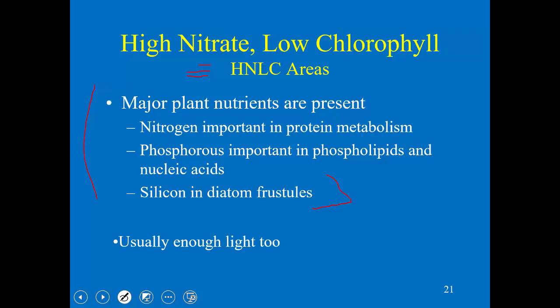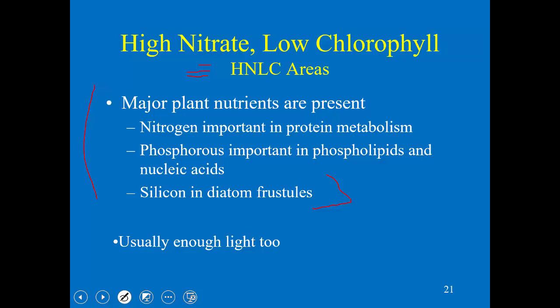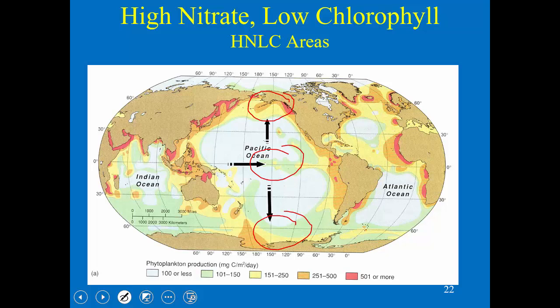There's also enough light — so it's not a question of light limiting, which is the case in the deep ocean. Even in the Southern Ocean and subarctic Pacific, it's pretty dark in winter, but during the summer there's still no blooms even when there's plenty of light. The three big HNLC regions are the subarctic Pacific, the equatorial Pacific, and the Southern Ocean. The Southern Ocean is highlighted because it's the biggest one — it has the most area by far.